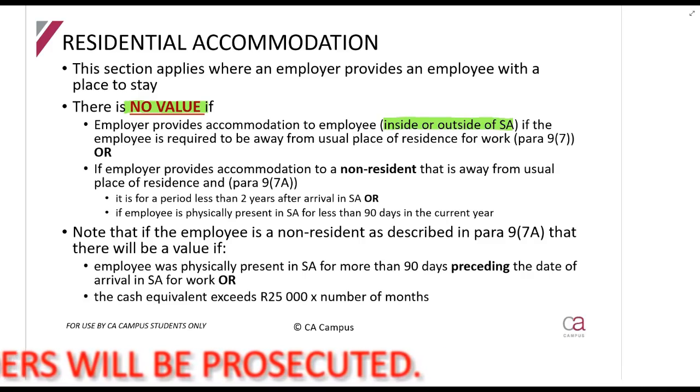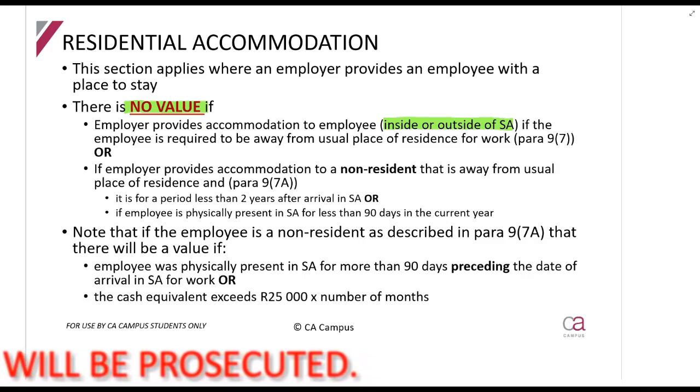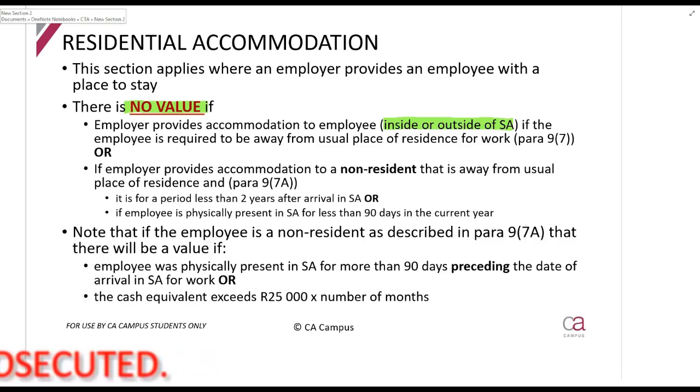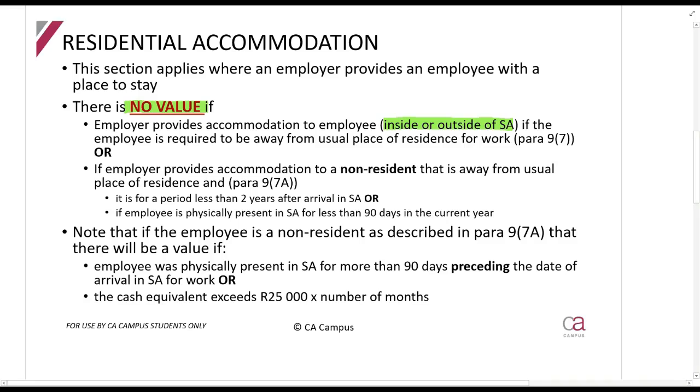For example, you live in Cape Town and your employer tells you to go to Bloemfontein, which is out of town, and gives you a place to stay there for work for free. You won't be taxed. Or your employer tells you to do work in England and gives you a place to stay there outside South Africa - you won't be taxed on it.